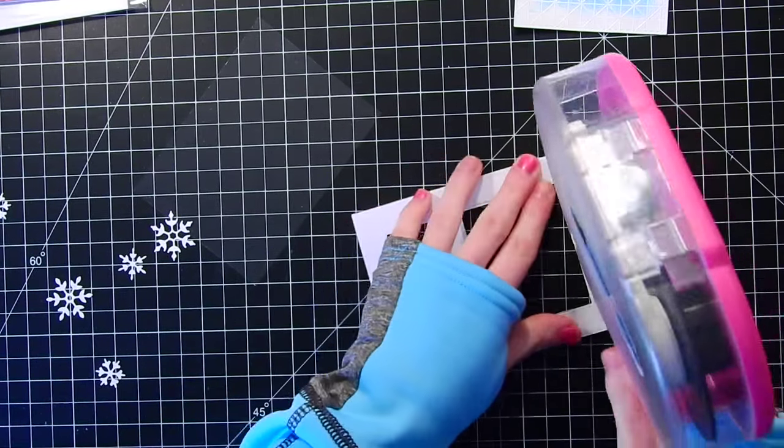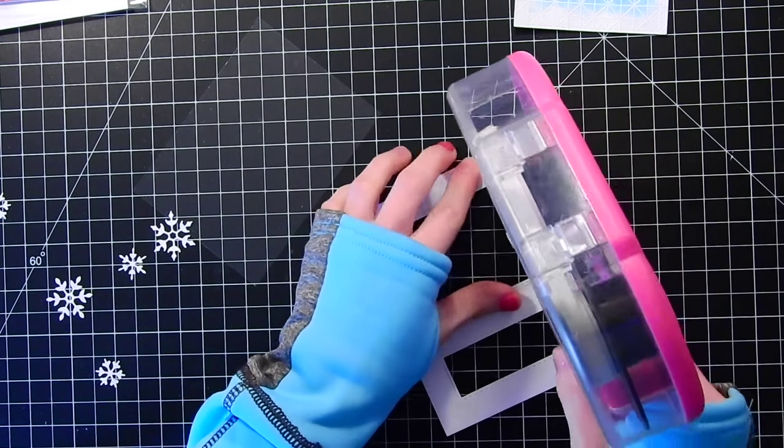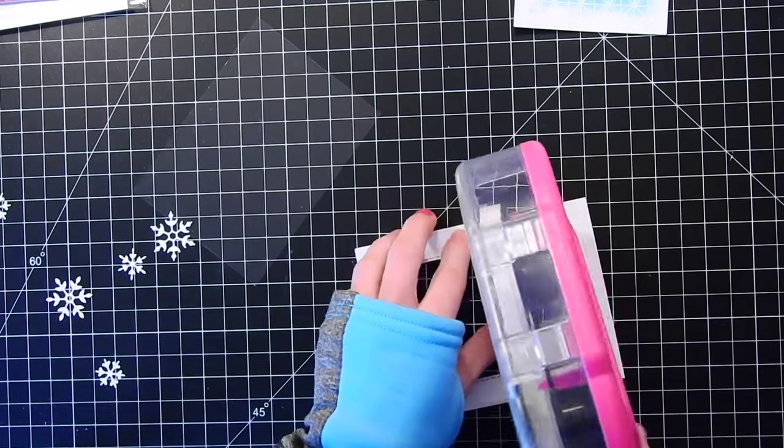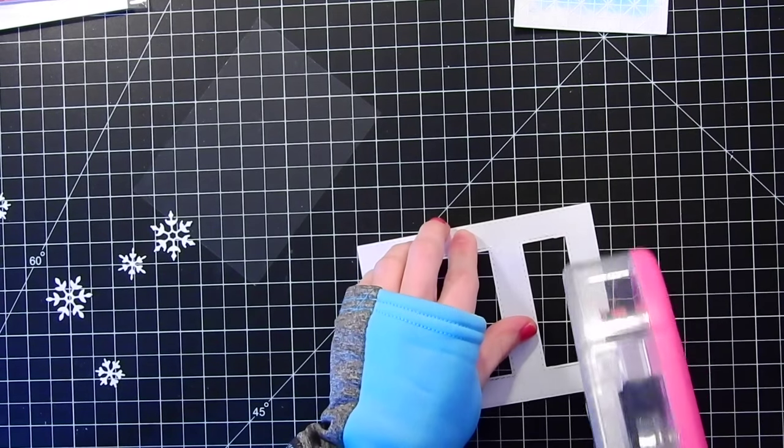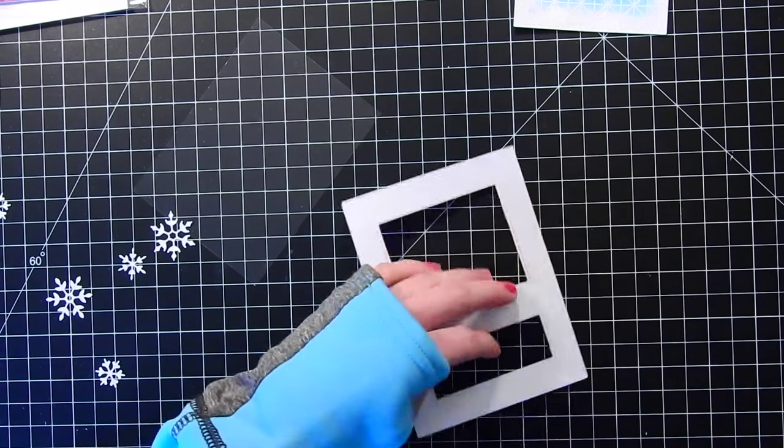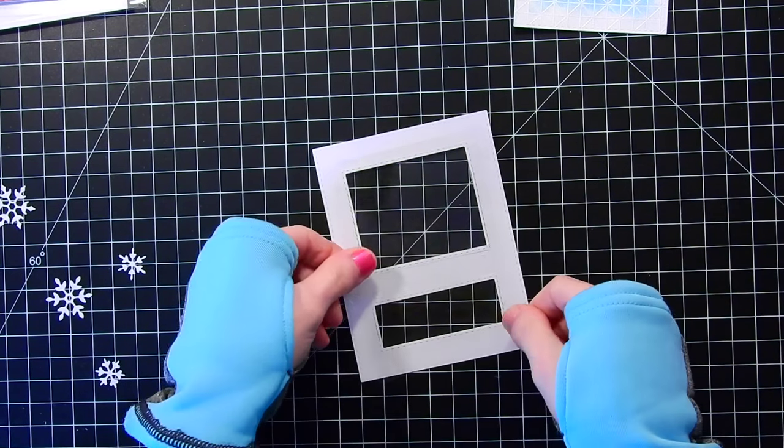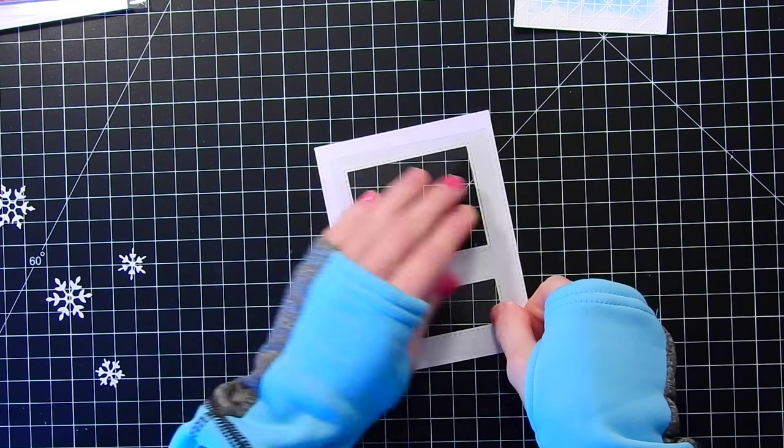So now I've made a little frame here using some stitched rectangle dies from Simon Says Stamp. I'm going to go ahead and attach a piece of acetate to the back side of this panel. Stuck to my fingers here. So I'll just lay that over top, and that'll be the window for our shaker card.